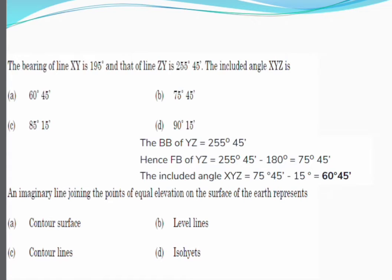The first question: the bearing of line XY is 195 degrees and that of line ZY is 255 degrees 45 minutes. The included angle XYZ is? Before solving, we need to keep in mind the formula for fore bearing and back bearing: back bearing equals fore bearing plus or minus 180 degrees. The positive sign is used when fore bearing is less than 180 degrees.